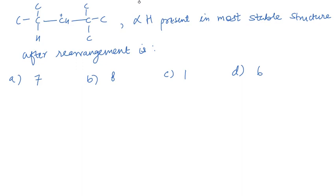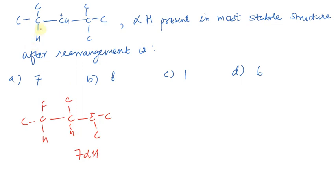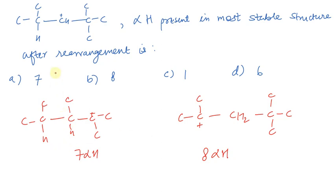Some people will think this methyl will come here — when the positive charge comes here, we will have 7 alpha hydrogens, which is option A. If we change this methyl here, we get a structure with a positive charge giving 7 alpha hydrogens. But if we use hydride shifting, we get 8 alpha hydrogens. In hydride shift: positive charge is here, 2 hydrogens here, then carbon, carbon, carbon — counting gives 8 alpha hydrogens. So option B — 8 alpha hydrogens — is correct.